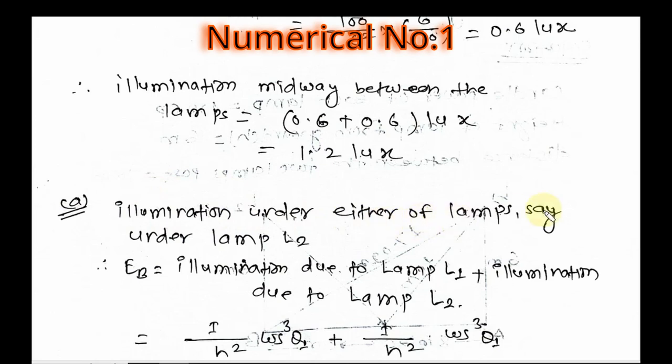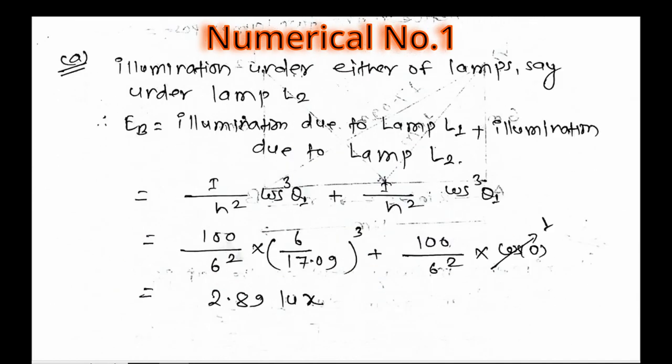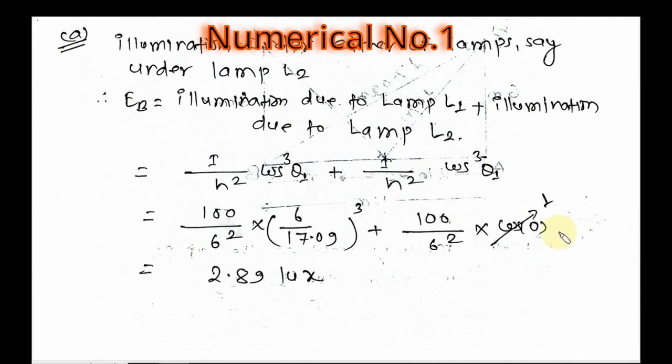Next, illumination under lamp L2. The illumination at point B equals illumination due to L1 plus illumination due to L2. Illumination due to L1 is I by h squared times cos cubed theta 1.